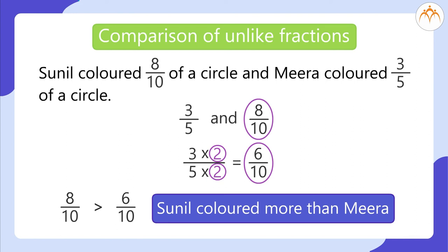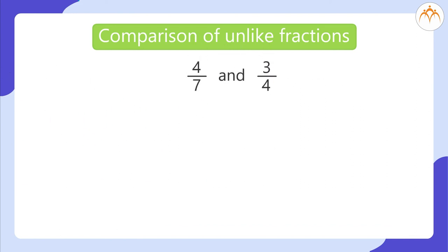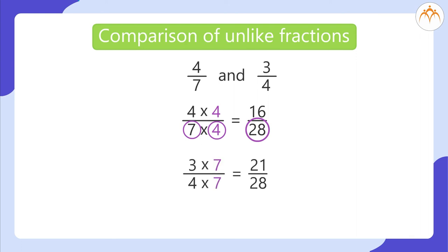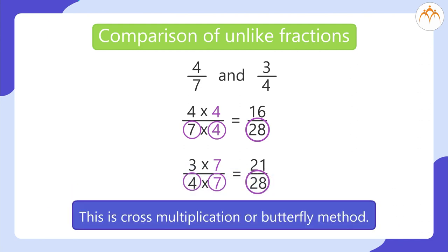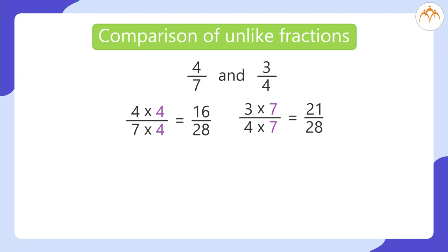Let us take another example of comparison of unlike fractions: 4 by 7 and 3 by 4. 4 multiplied by 4, by 7 multiplied by 4, is equal to 16 by 28 — we multiply denominator 7 by 4 to get denominator 28. Then 3 multiplied by 7, by 4 multiplied by 7 — we multiply denominator 4 by 7 to get 28. This is the cross multiplication or butterfly method; the common denominator is 28.